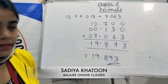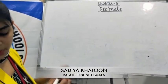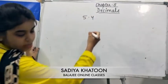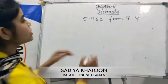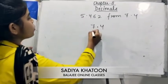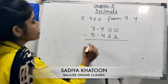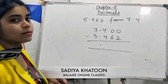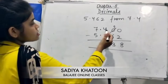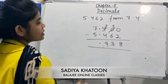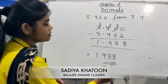For subtraction, keep the decimal placed properly. Suppose you subtract 5.462 from 7.4. Write 7.4 first, then 5.462 below it. Fill vacant places with zeros: 7.400 minus 5.462. Borrowing as needed: 10 minus 2 is 8, 9 minus 6 is 3, 13 minus 4 is 9, and 6 minus 5 is 1. The final answer is 1.938.